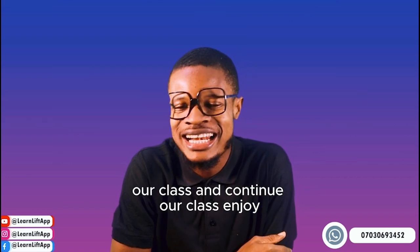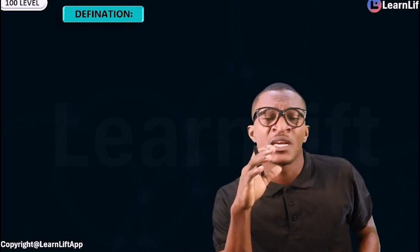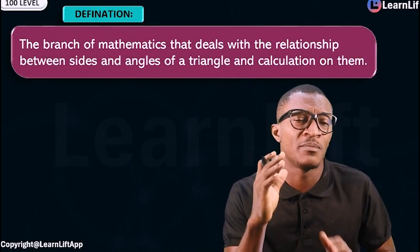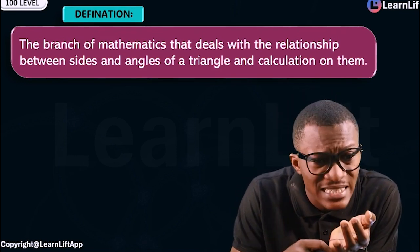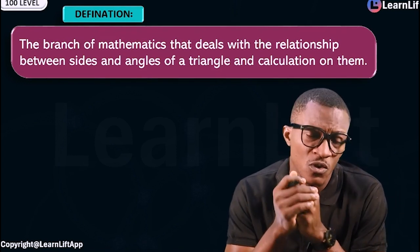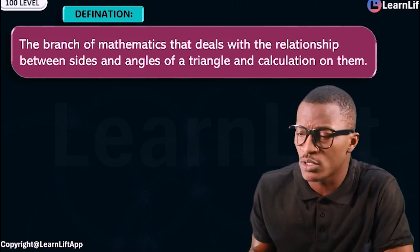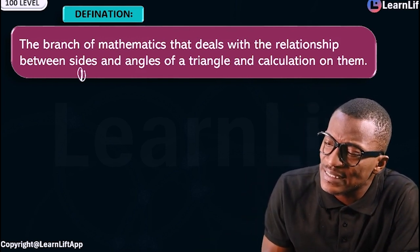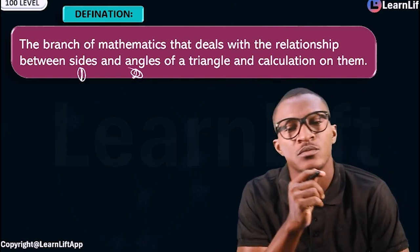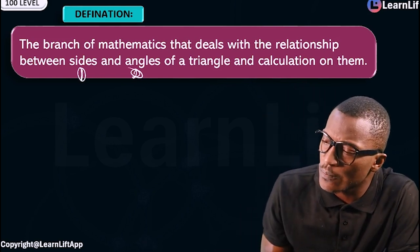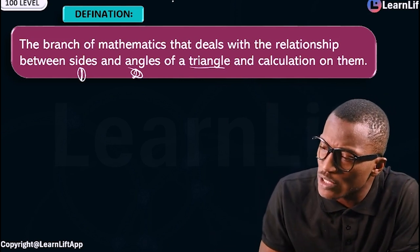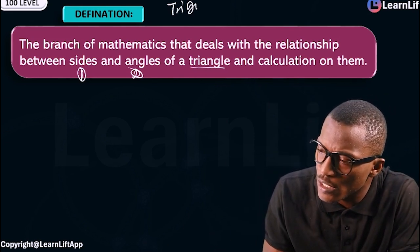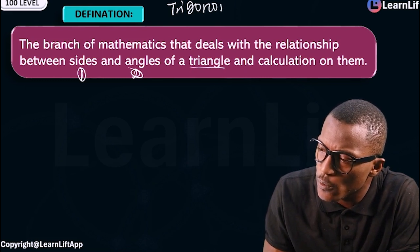Let's proceed quickly and continue our class. Quickly, let us define trigonometry. Trigonometry is the branch of mathematics that deals with the relationship between the sides and angles of a triangle and the calculation on them. We'll talk about the relationship between sides and angles of a triangle and how that is calculated.